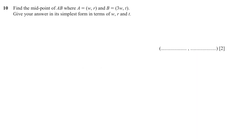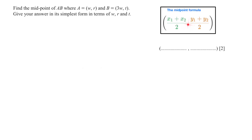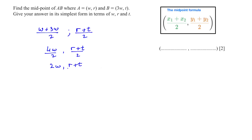Question 10: Find the midpoint of AB where A = (w, r) and B = (3w, t). Give the answer in simplest form in terms of w, r, and t. Using the midpoint formula: x = (x₁ + x₂)/2, y = (y₁ + y₂)/2. We get (w + 3w)/2 = 4w/2 = 2w, and (r + t)/2. So the midpoint is (2w, (r + t)/2).